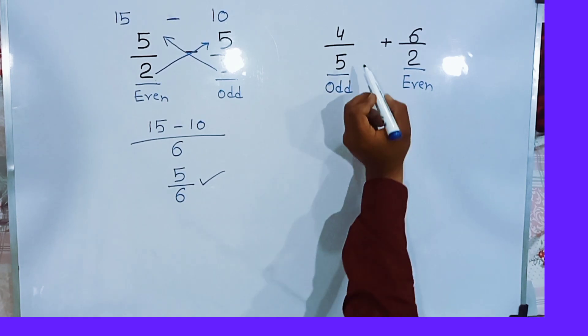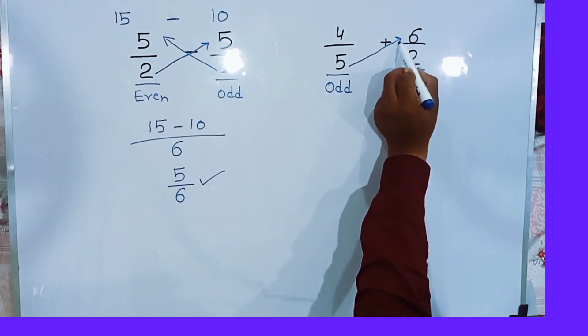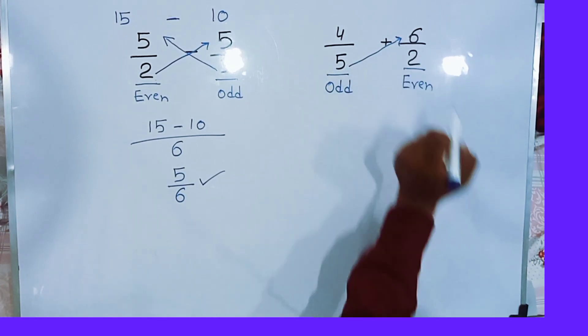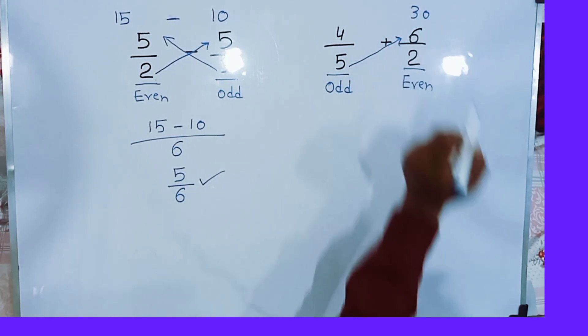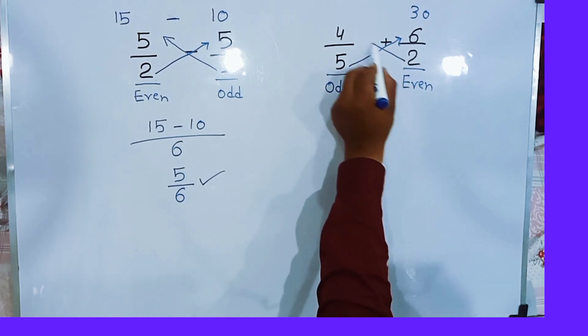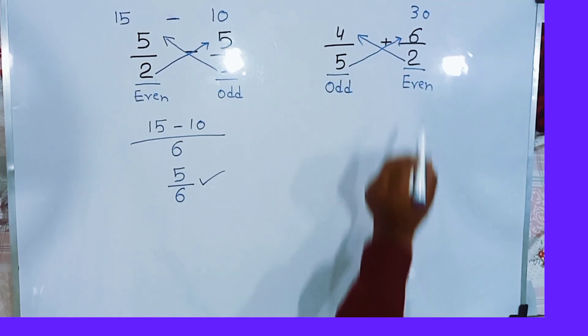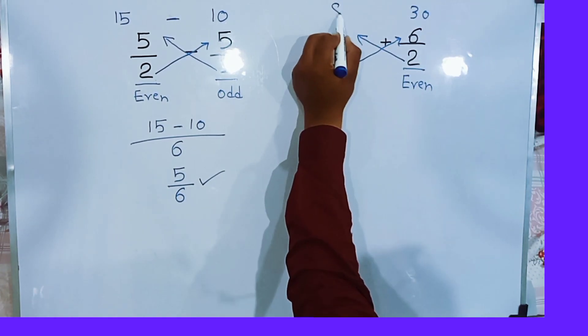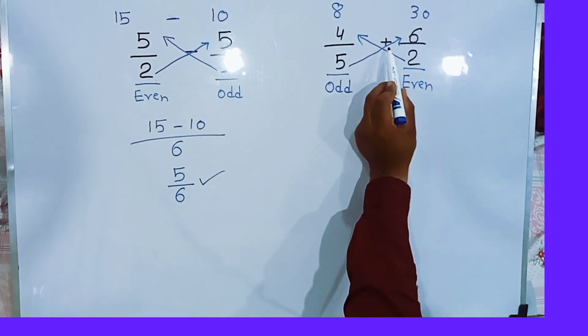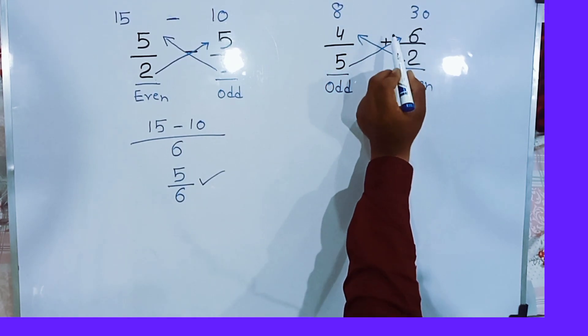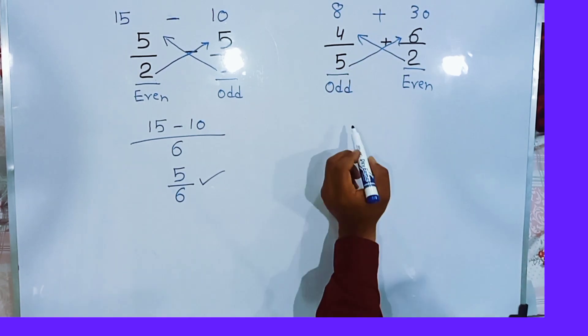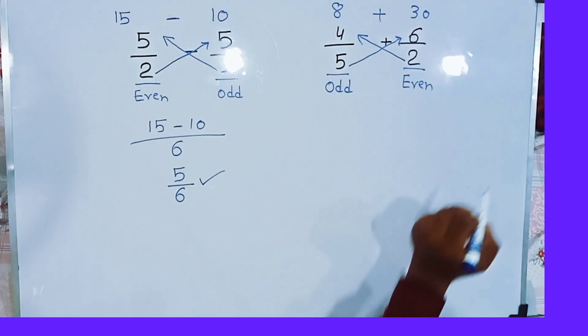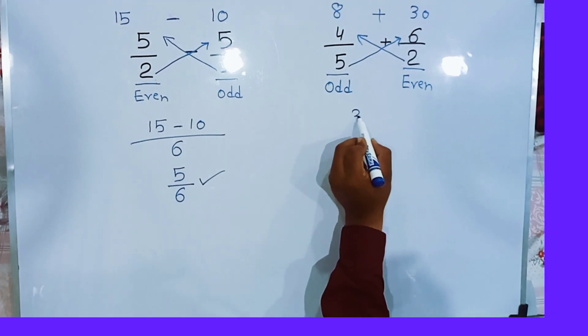5 multiplied by 6. 5 multiplied by 6, we will get 30. 2 multiplied by 4. 2 fours are 8. Then simply we plus these values. 8 plus 30, we will get 38.